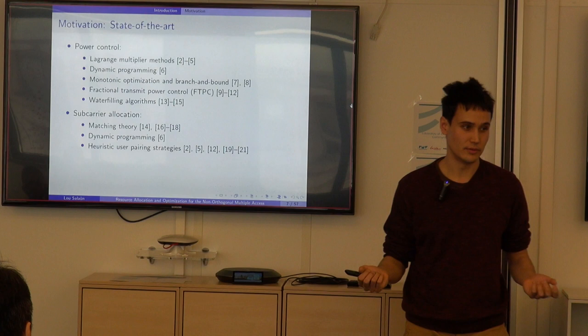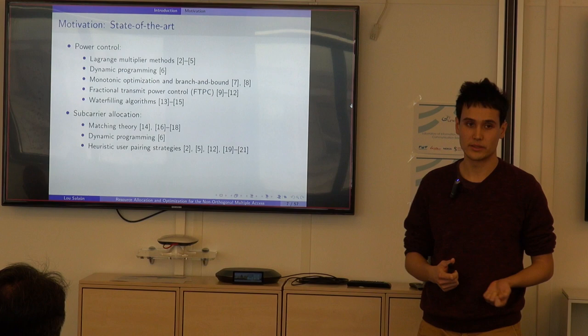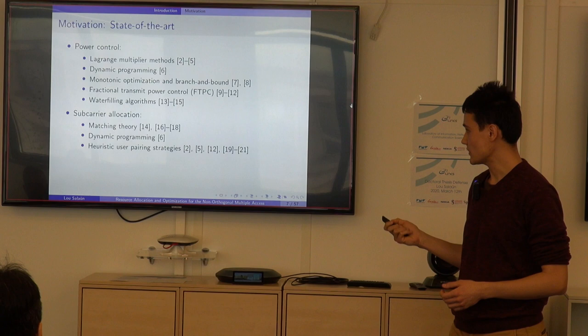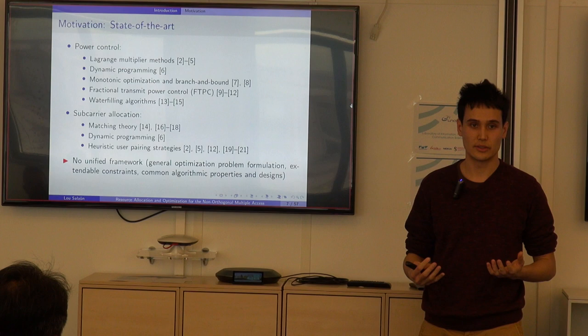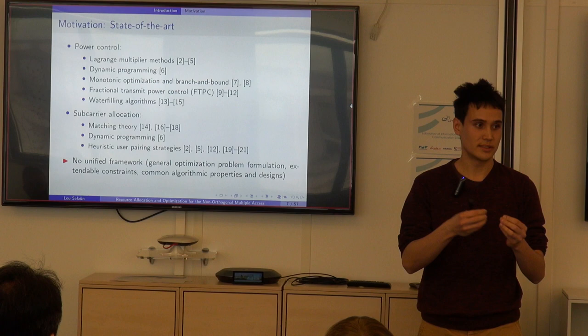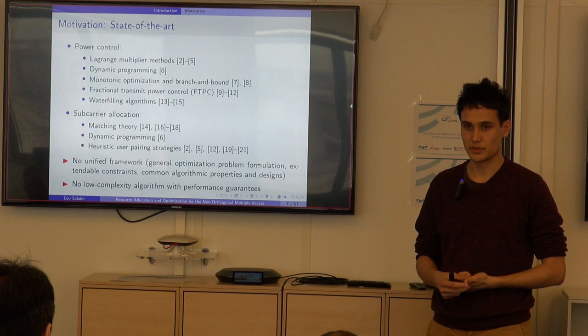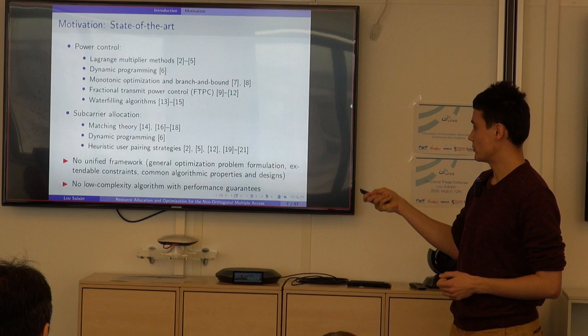Many algorithms have been developed for these problems. For power control, people use fractional transmit power control heuristics and the well-known water-filling algorithm. For subcarrier allocation, people have used matching theory, dynamic programming, and many heuristics. The first issue is that there is no unifying framework — no common general problem formulation covering all utility scenarios in the literature. A second issue is that all existing work is either optimal with very high, impractical complexity, or low-complexity heuristics without performance guarantees.